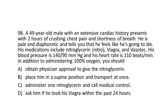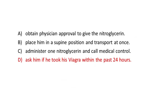Question 98. A 49-year-old male with an extensive cardiac history presents with two hours of crushing chest pain and shortness of breath. He is pale and diaphoretic and tells you that he feels like he's going to die. His medications include nitroglycerin, Viagra, and Vasotec. His blood pressure is 140/90 mmHg and his heart rate is 110 beats/min. In addition to administering 100% oxygen, you should: a. Obtain physician approval to give the nitroglycerin. b. Place him in a supine position and transport at once. c. Administer one nitroglycerin and call medical control. d. Ask him if he took his Viagra within the past 24 hours. The answer is d: Ask him if he took his Viagra within the past 24 hours.